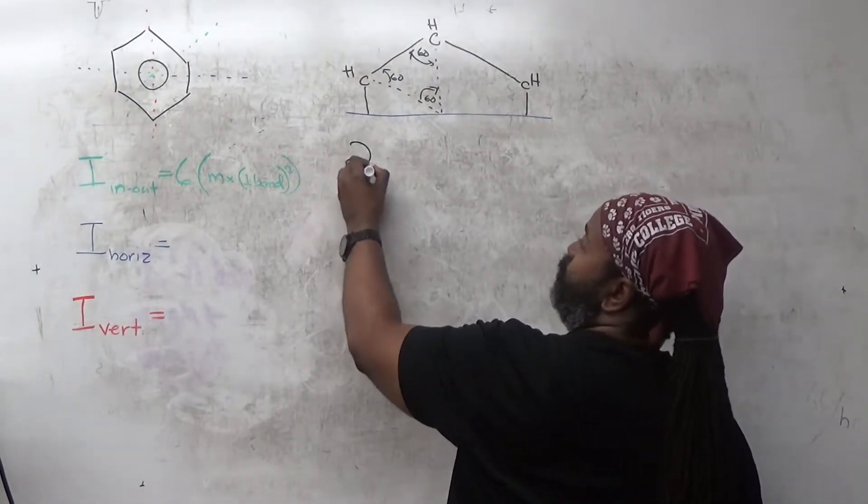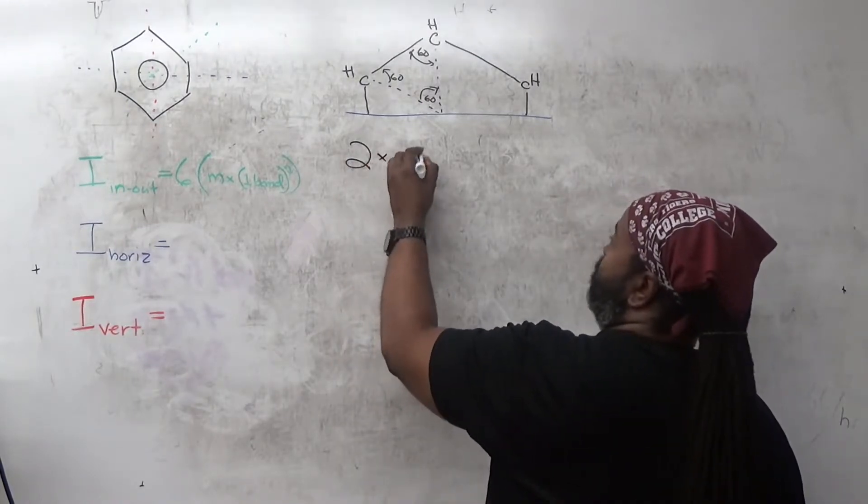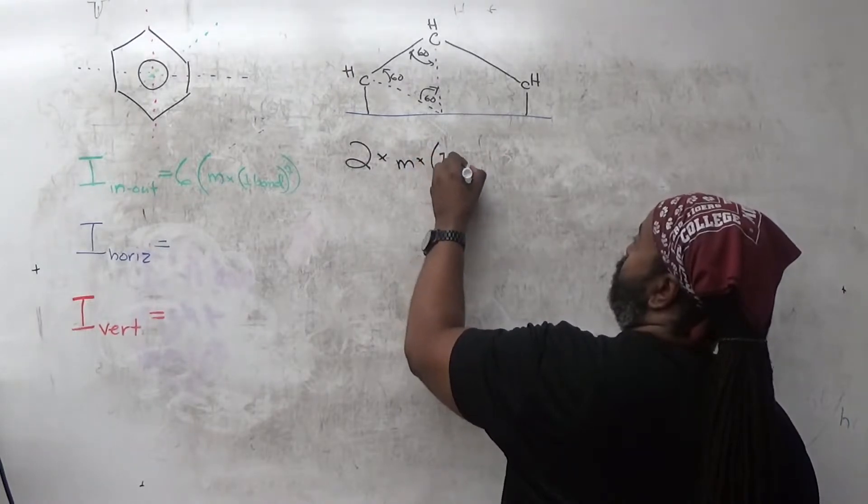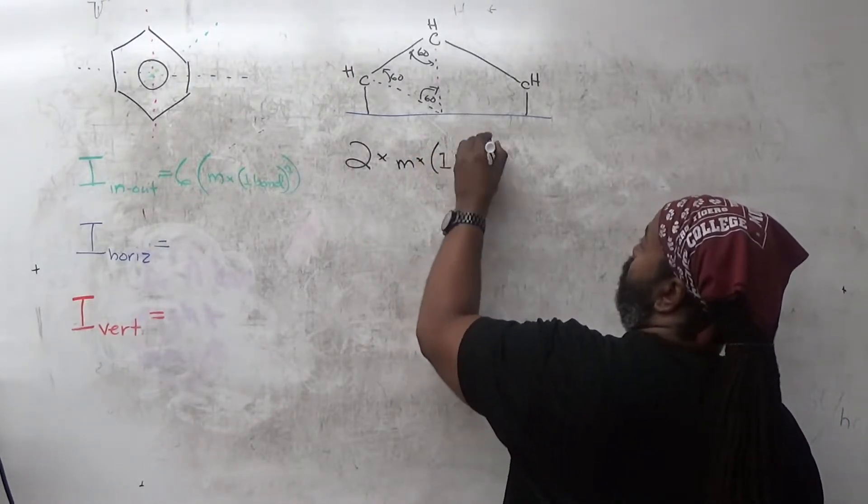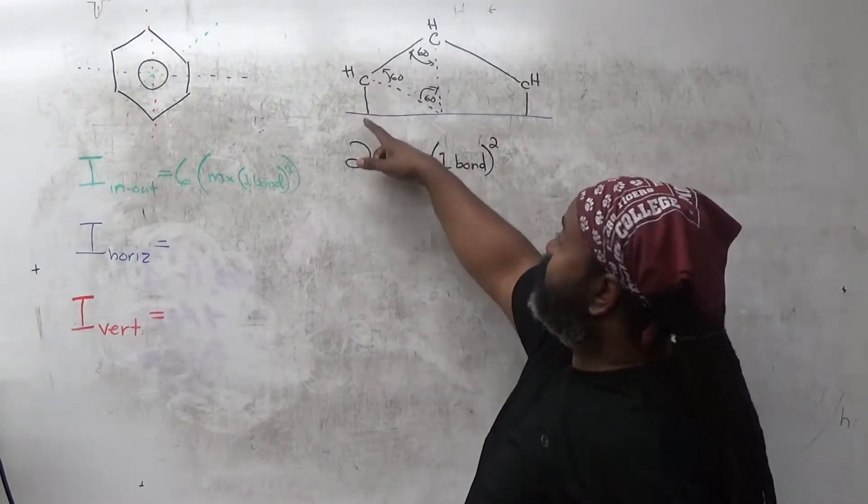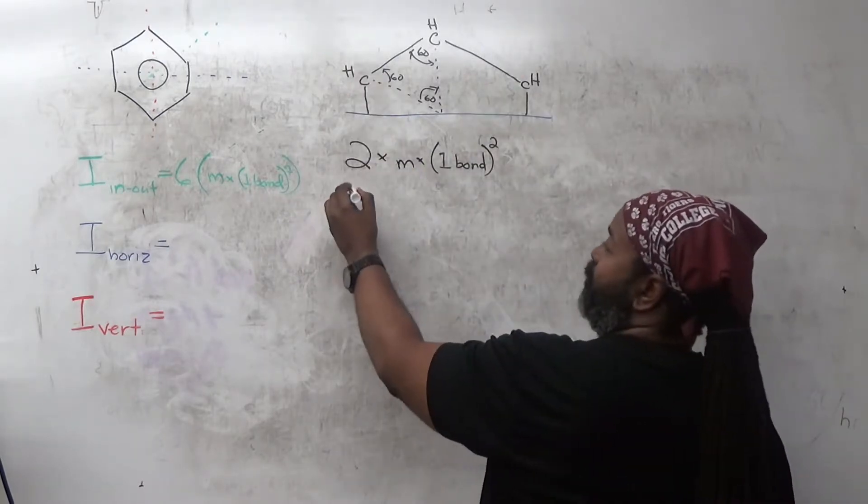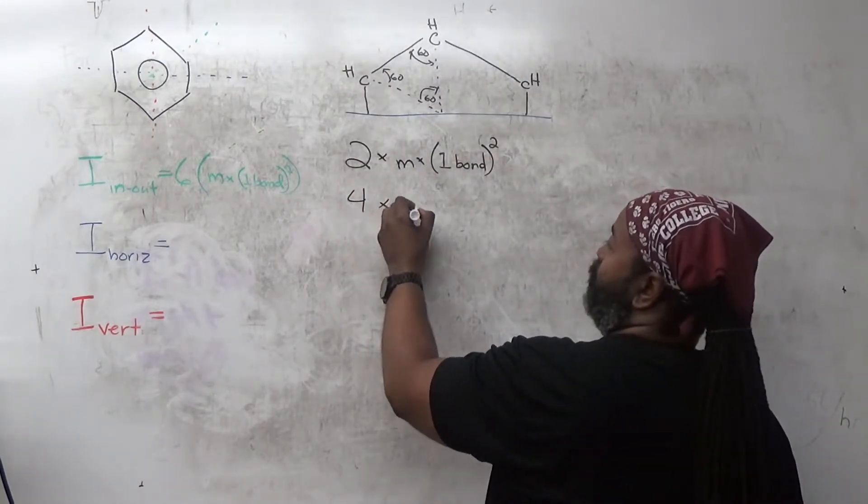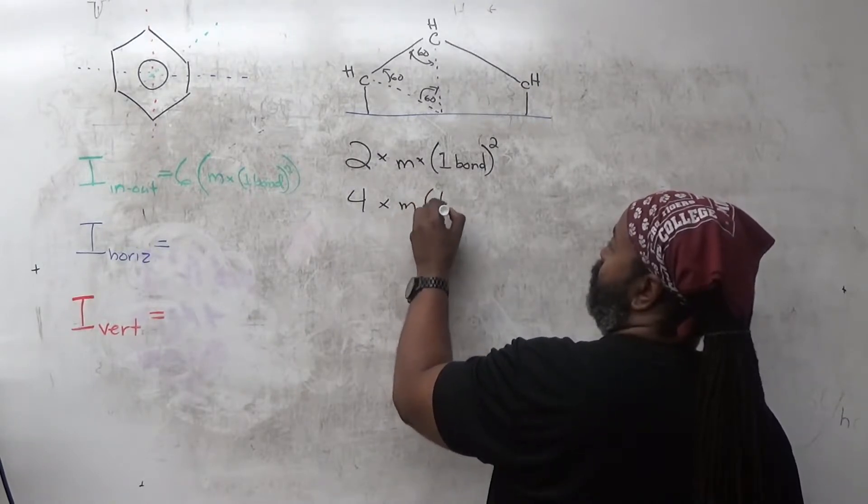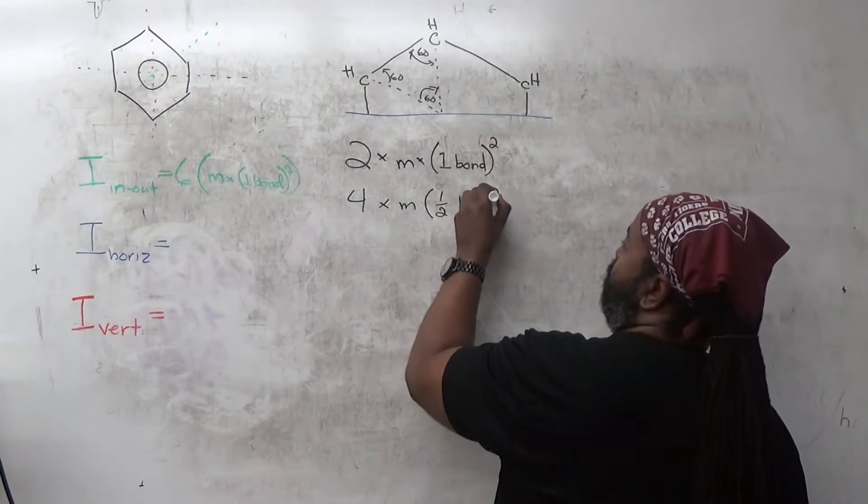I'm going to have two of these that will be that mass, and it's one bond, and that's squared. And then here, this is a half of a bond. So I've got these two and the two others. So that's four, mass. And this is one half of a bond length, and that's squared.